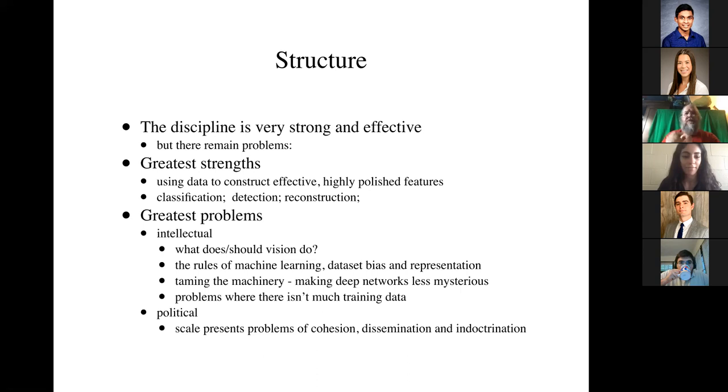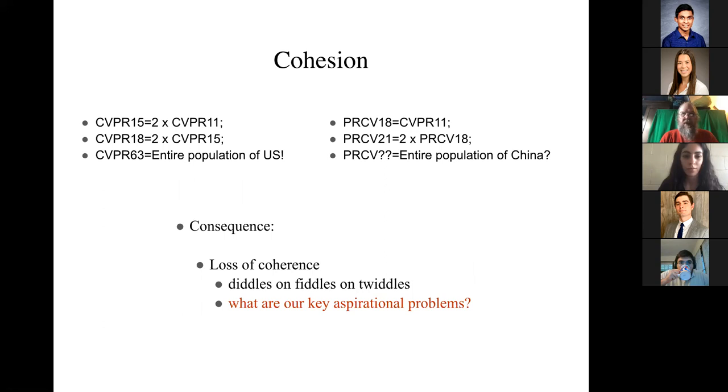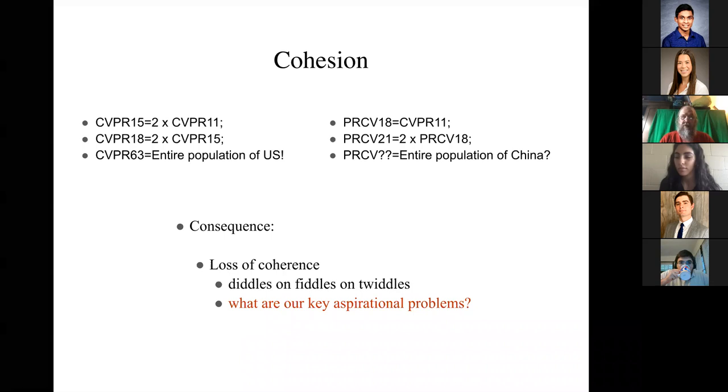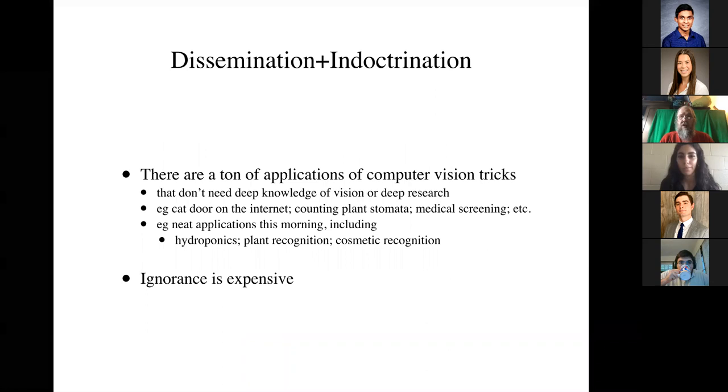So we have one last thing. Actually, it was my question. Javier asks if you could explain more about the political problems. Oh, yeah, the political problems are sort of the obvious ones. Our conferences double in size every three years. Right now, I think the entire population of the United States will go to CVPR in 2063. And the entire population of China will go to PRCV probably about 2071 or so. The problem with that is it's really hard for new people to know how to get famous, right? You have a huge community and really an awful lot of stuff is just a fiddle or a diddle or a twiddle. And it's very difficult to get any kind of consensus about what the key aspirational problems are. The other problem is dissemination and indoctrination. There are a ton of applications. Like I mentioned, you know, there are all sorts of areas where great value could be created by knowing relatively simple computer vision tricks.